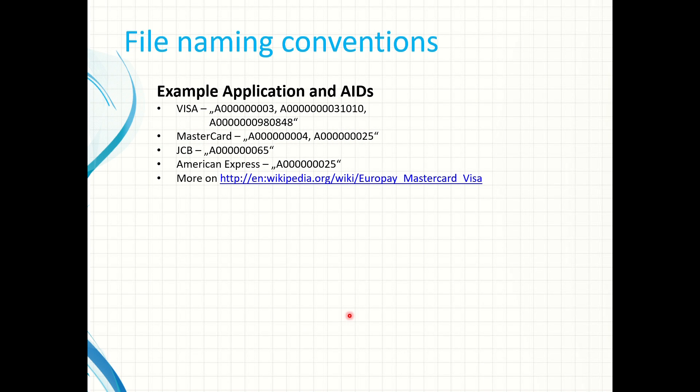Here are some examples of application IDs I took from Wikipedia. They are unique worldwide. You see for example the application ID for Visa. The first one is just five bytes long. It is completely made up of a registered ID.